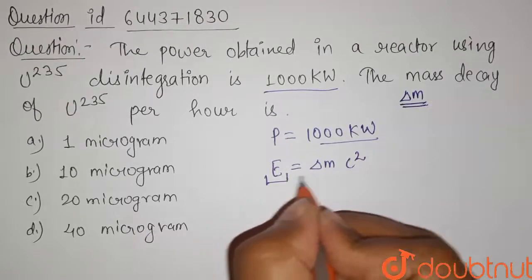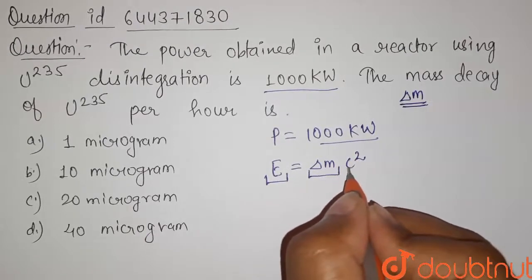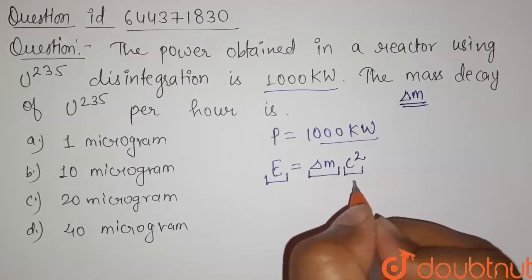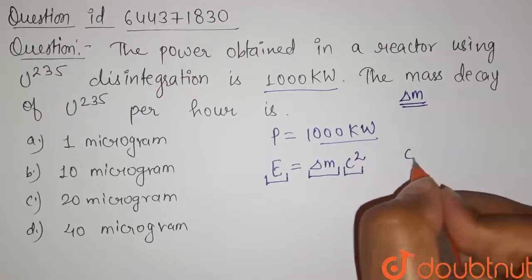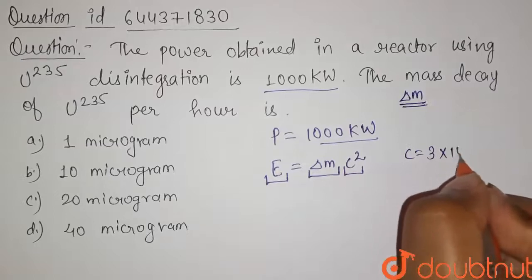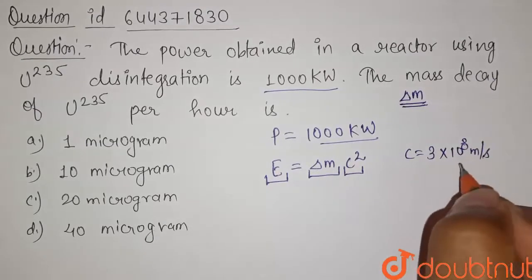Here, energy is the energy released, delta m is the mass defect or mass decay, and c is the speed of light. c has the value 3 times 10 to the power 8 meters per second.